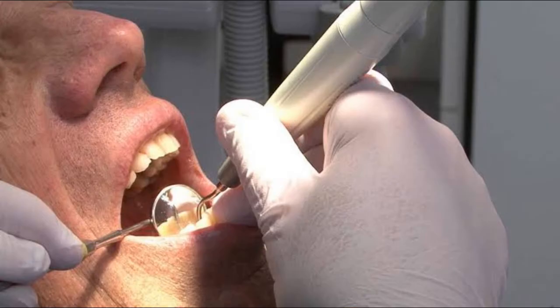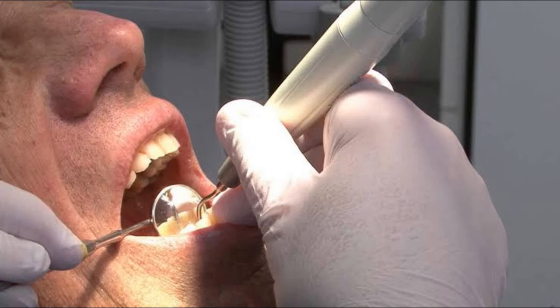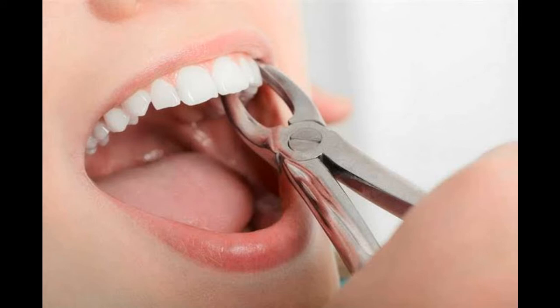Unless a tooth is not giving any trouble, we need not do anything with regard to a pulp stone. Occasionally, when the pulp stone impinges the nerve, it creates pain. In endodontic procedures, we need to negotiate the stones in order to access the canals. Large pulp stones present in the pulp chamber can be disintegrated with the help of ultrasonic scalers. We should try to negotiate the canals with the help of smallest size K-files, like a 10 size K-file. When the identification or negotiation of the canal is impossible, we can go for extraction.